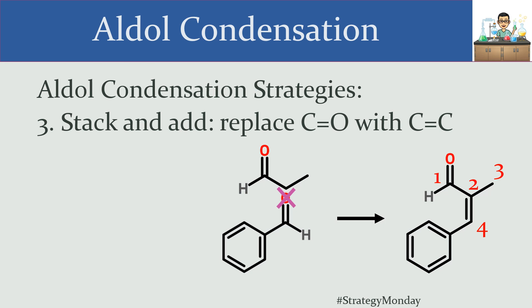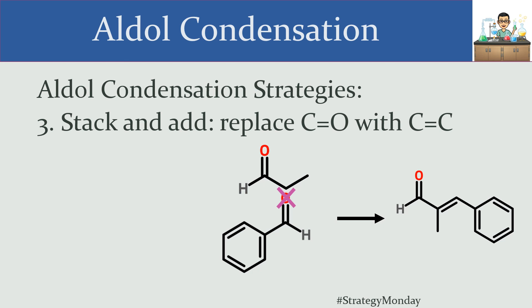The product isn't quite perfect yet because the phenyl ring is on the same side as the aldehyde substituent — we want those on opposite sides of the double bond. After a little cleanup, we arrive at the final molecule. This gives you a quick way to determine the product without having to work through the full mechanism. Give this strategy a try the next time you see an aldol condensation problem, and let me know what you think in the comment section.